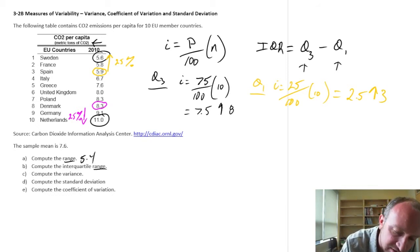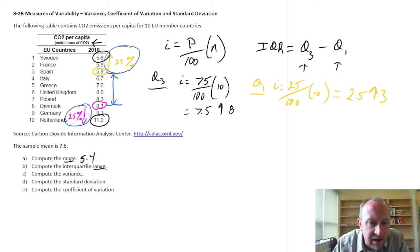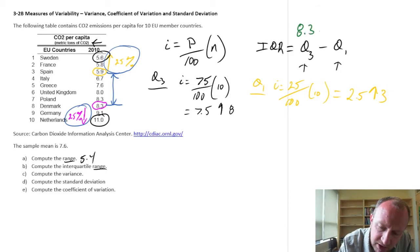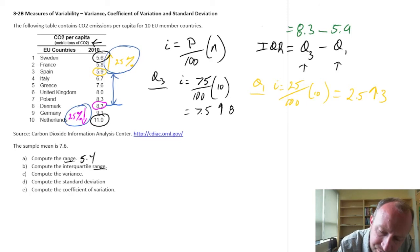Our interquartile range is that difference between 8.3 and 5.9. We're excluding that smallest 25% and excluding that largest 25%. The interquartile range then, if I substitute these numbers in, is 8.3 minus 5.9. So my interquartile range is 2.1.